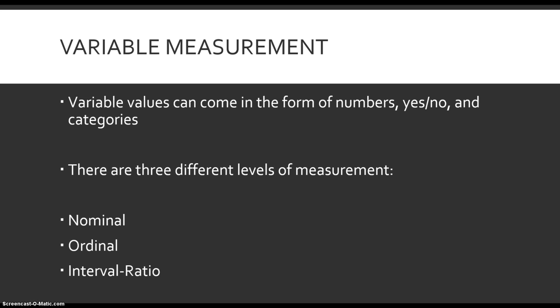Variables can come in a variety of different forms, and they have three different levels of measurement: nominal, ordinal, and interval ratio.